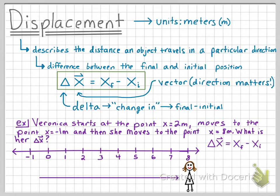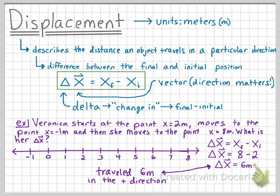So let's plug in her final and initial positions. Once we do this calculation, we find that her displacement was 6 meters. This means that Veronica traveled 6 meters in the positive direction since our displacement was a positive value.